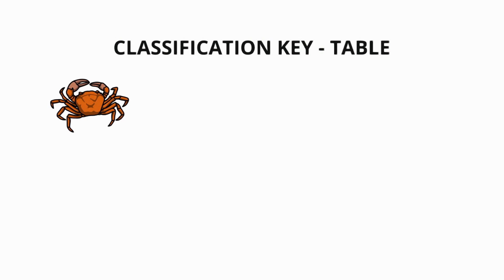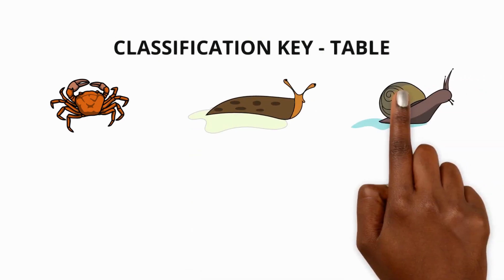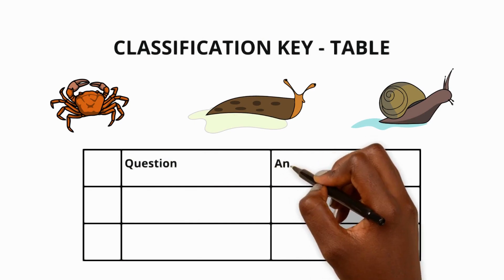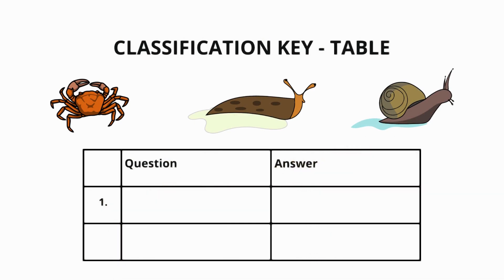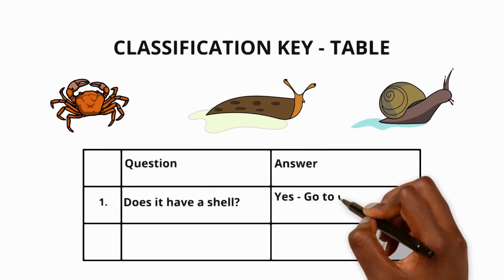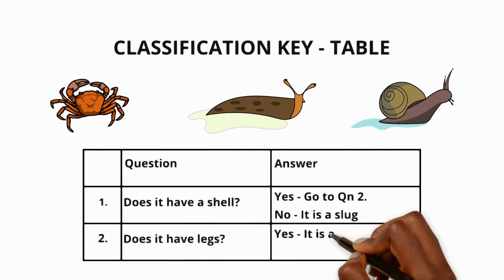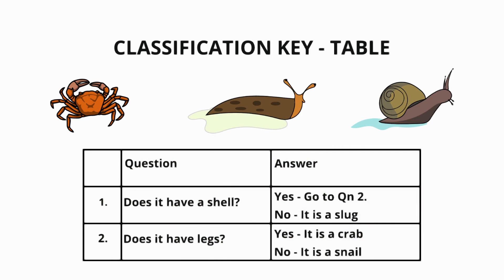A simple type of classification key is shown in a table format. Here's a classification key for identifying different invertebrates. We can ask if it has a shell or legs for example. With each answer we either move on to another question or identify the animal or plant.